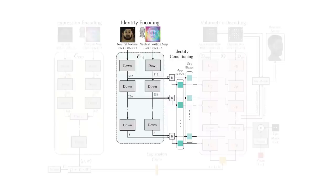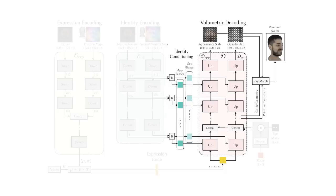Specifically, it encodes identity as a set of multi-resolution bias maps that is computed once for each new subject. These bias maps are added to the intermediate features of a convolutional decoder that produces volumetric primitives, which can be used to render the avatar using ray marching.